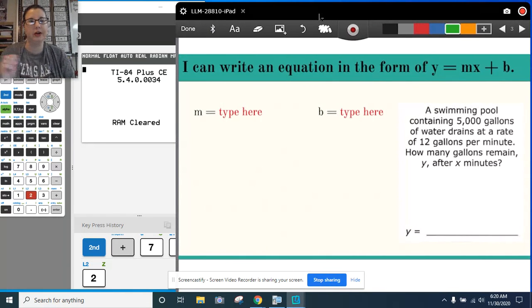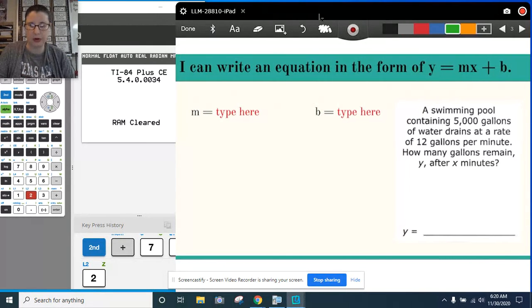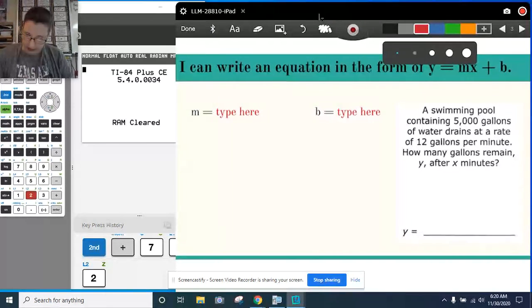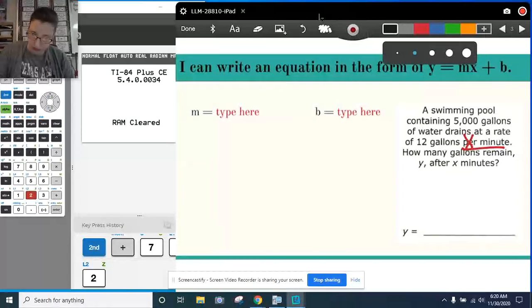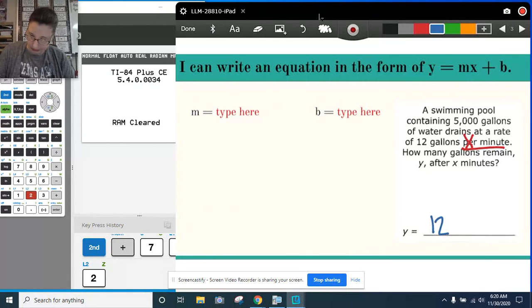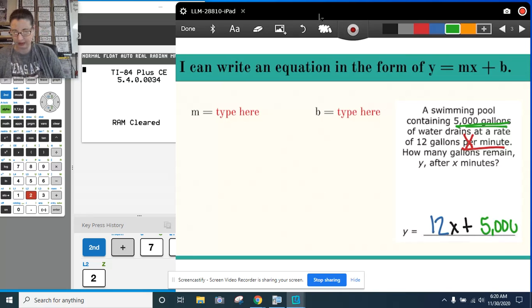And I'm going to look for my slope. It's my rate of change. And it's what number comes before per, each, and every. So I'm going to look for the words per, each, and every. And I see here per minute. So right here I want to put a big x. That means my 12 goes in front of it. And I'll have y is equal to 12x plus, and I want to see what my b is.